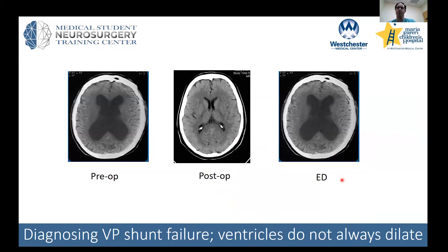When you see shunt patients in the emergency room: preoperatively a patient may have very large ventricles with signs of increased pressure, and after shunt placement the ventricles come down. If they return and ventricles are enlarged again, that's consistent with shunt failure. An important learning point is that not all patients with shunt failure have enlargement of their ventricles — if you see it, that supports the diagnosis, but if you don't, it does not exclude it.